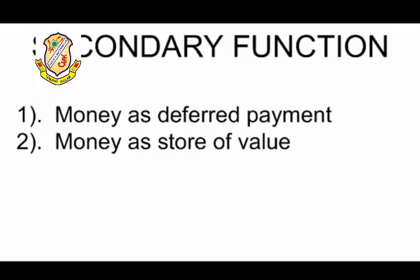The last important secondary function is that money can be easily used as a store of value. If you sell your goods, it is very easy to convert them into money and keep it in your home safe, in a locker, or deposit it in a bank where it becomes safe — or you can invest that money somewhere else. So it is easy to store value. Carrying notes with you is much easier than carrying your goods. That is the fourth drawback of barter system overruled with the evolution of money.